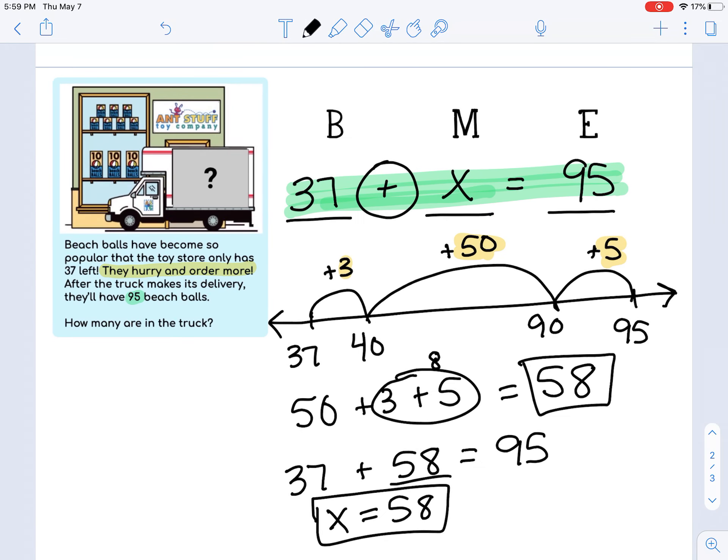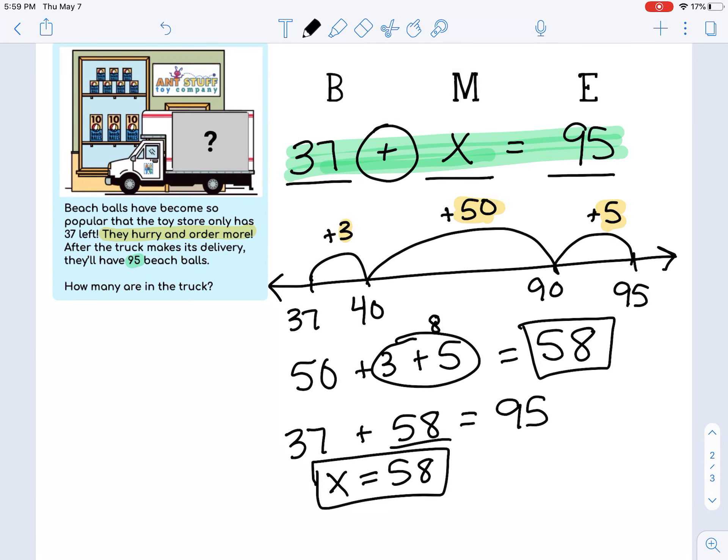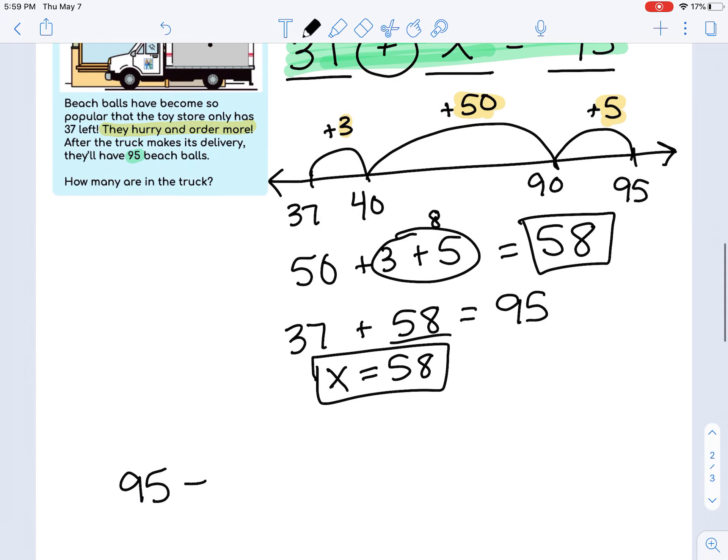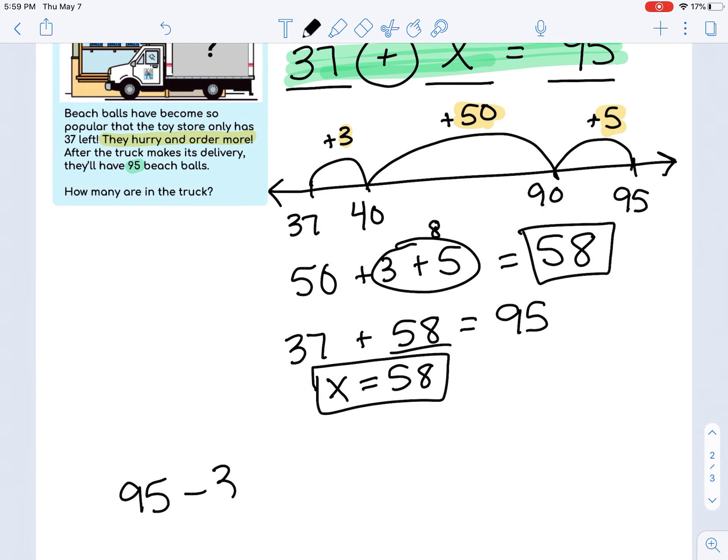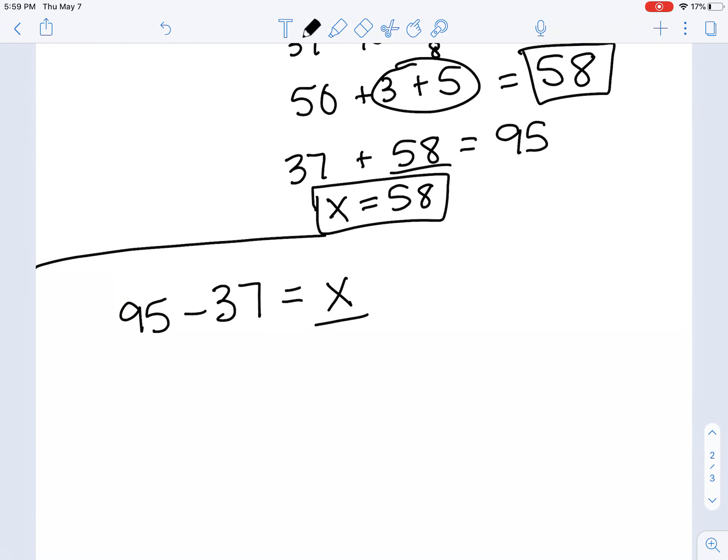Another way you could have solved this problem is like this: finding out the difference between 95 and 37 by subtracting. So if that is how you did it, that is okay also. So I know some students are going to do it like this, which is also completely accurate and this works as well—is they did 95 take away 37 equals x.